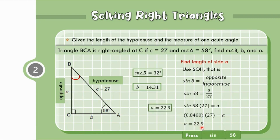So the answers are: measure of angle B equals 32 degrees, length of side B equals 14.31, and length of side A equals 22.9. That's it for our second given.